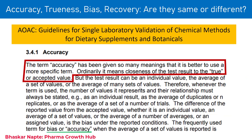The fourth important guideline is the AOAC — guidelines for single laboratory validation of chemical methods for dietary supplements and botanicals. According to this guideline, the term accuracy has been given so many meanings that it is better to use a more specific term. The guideline acknowledges many synonyms used for accuracy. Ordinarily, accuracy means closeness of the test result to the true value — again consistent with ICH and ANVISA — how closely your observed value matches the true value.